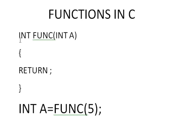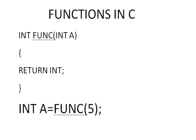In the function definition we specify a return type, and the value returned must match that type. Also, a function can only return a single value at a time — we cannot return multiple values simultaneously.